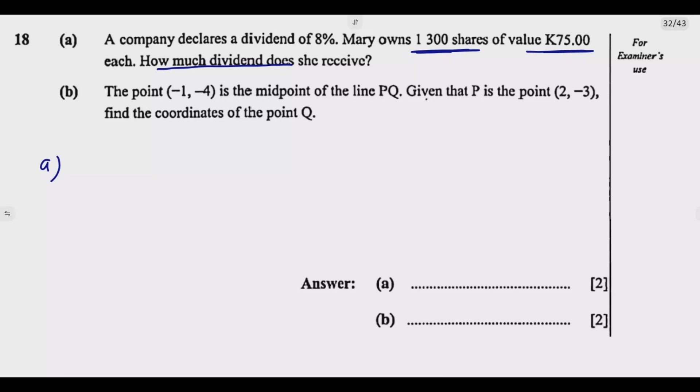So I'll define the total nominal value, TNV, in the first step. Total nominal value of this share is equal to the number of shares, which we are given, 1,300 shares, multiplied by the value per share.